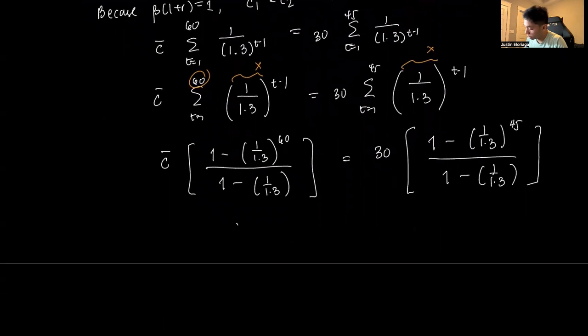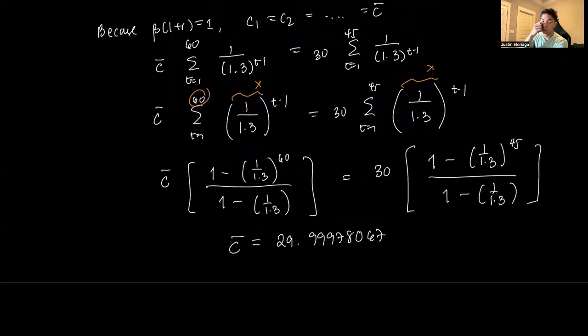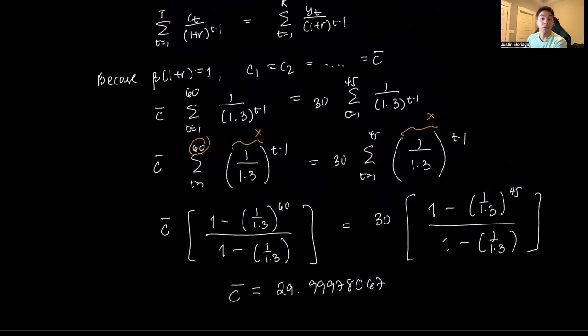If we solve for C, we get C-bar equals 29.99978067. That's an example of the multi-period model and concepts associated with it. Thank you for your attention, and I'll see you in the next video.